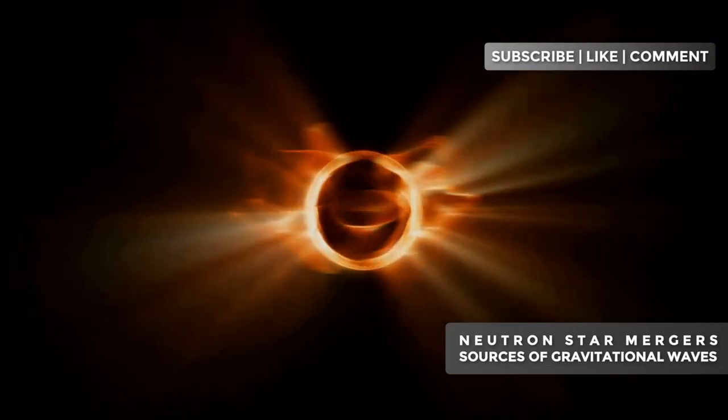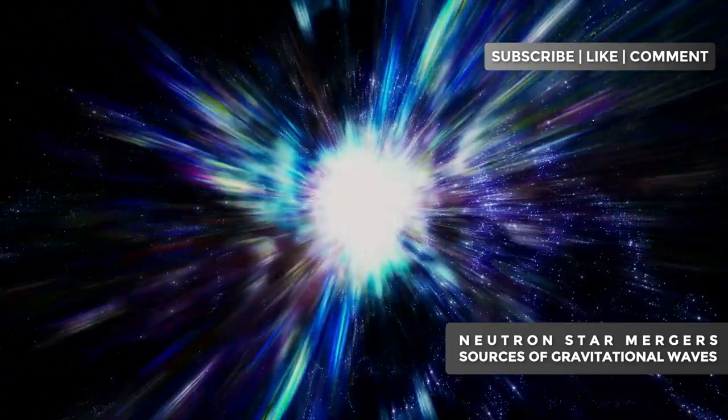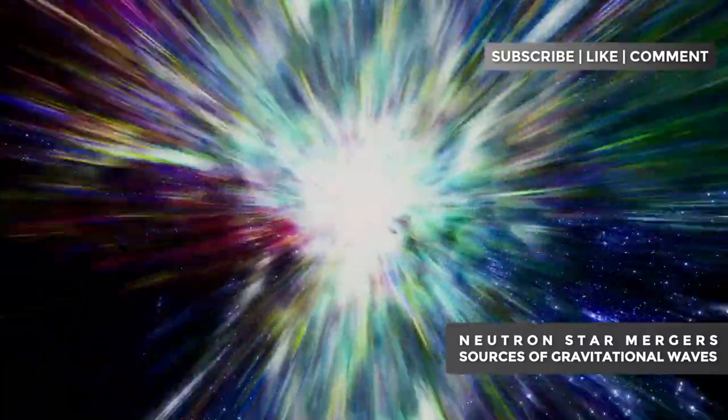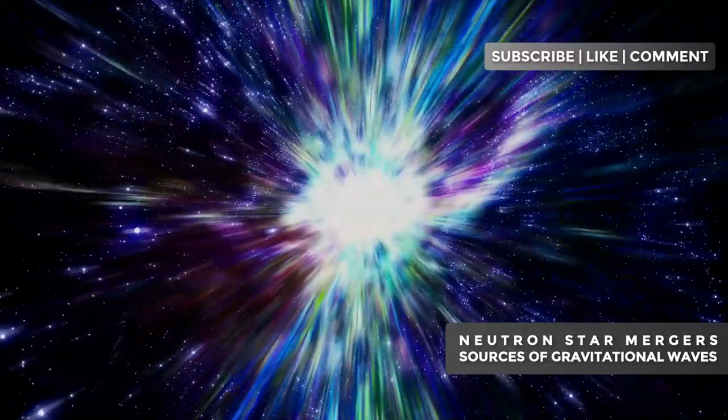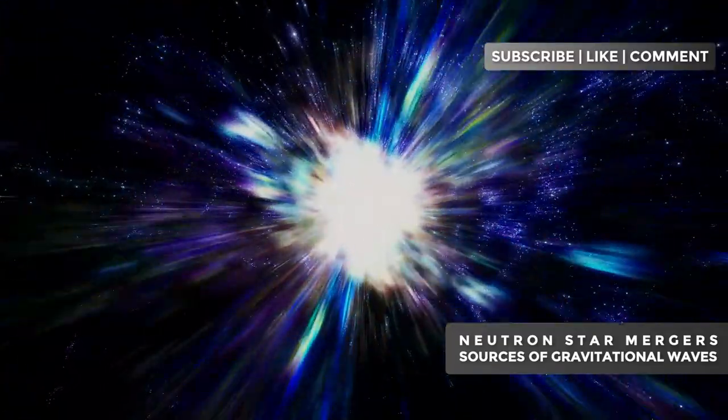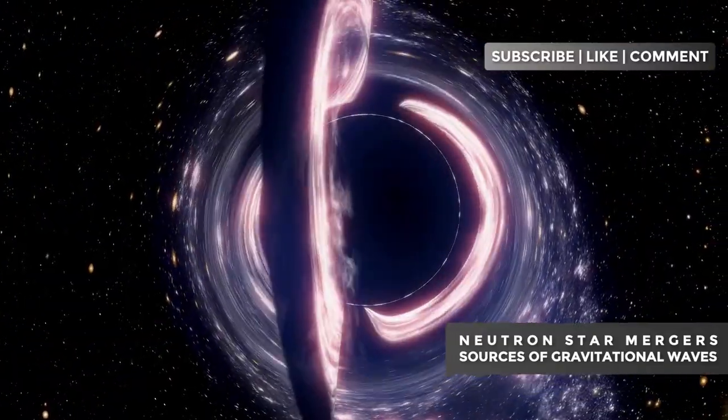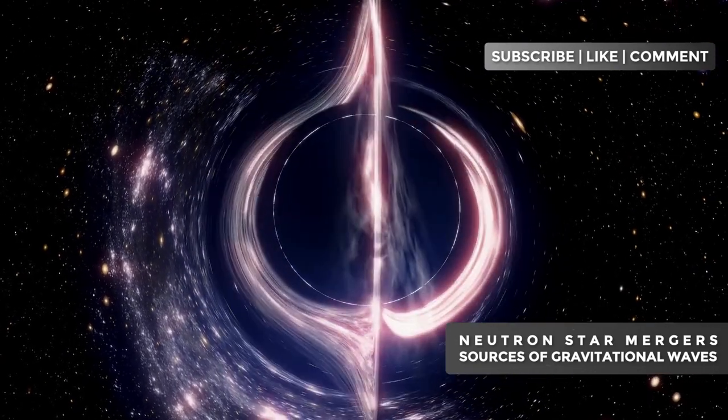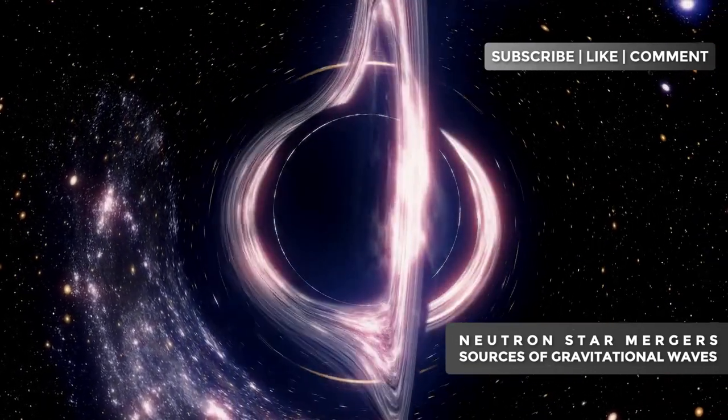Think of this as a cosmic point of no return. There's a theoretical limit, known as the Tolman-Oppenheimer-Volkoff limit, that determines the maximum mass a neutron star can have before collapsing into a black hole. It's as if we were playing with the limits of nature itself, observing objects that are on the threshold between being an extremely dense neutron star and a black hole.